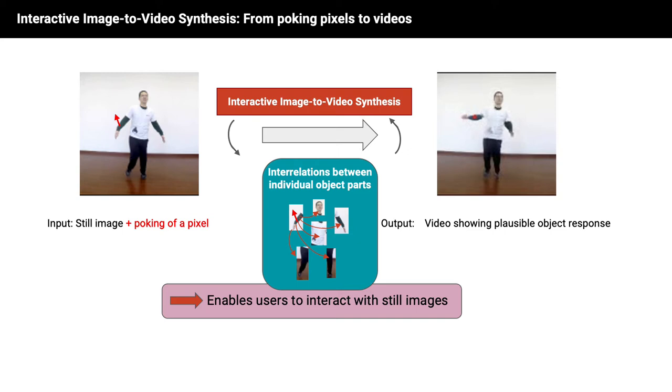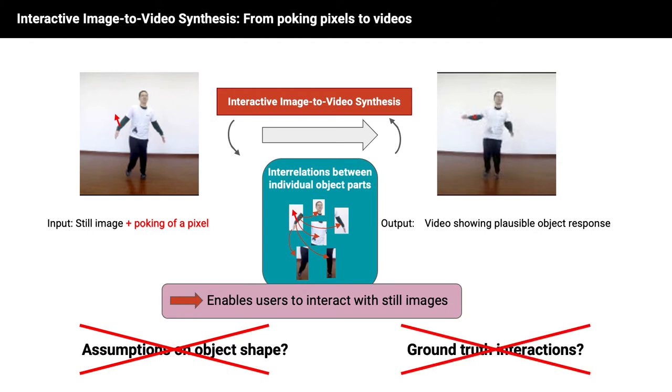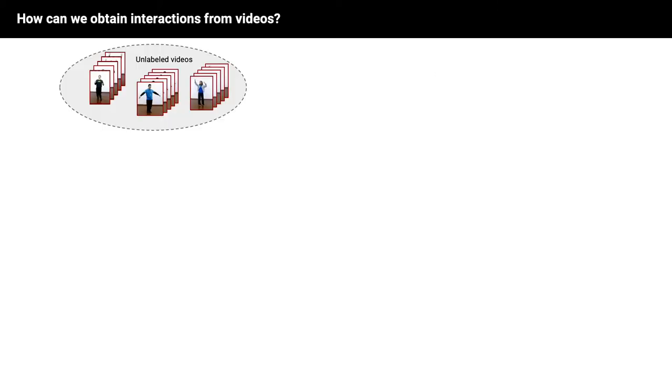Moreover, we don't want to do this only for humans, but for arbitrary rigid objects, and we want to learn our model in a self-supervised fashion, only from videos. Thus we don't want to make assumptions on object shape, and don't assume ground truth concerning the pokes to be available for training the model. This means that we need to generate train-time interactions from what we are given, only unlabeled videos.